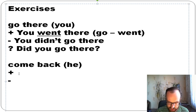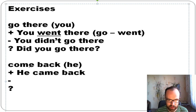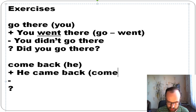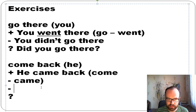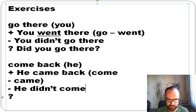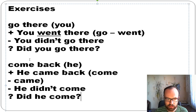Now with 'he / come back': Statement: 'He came back' — come is irregular, second form is came. Negative: 'He didn't come.' Question: 'Did he come?' So we have: 'He came back,' 'He didn't come,' 'Did he come?'